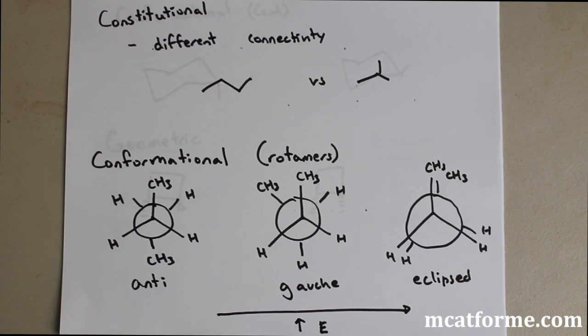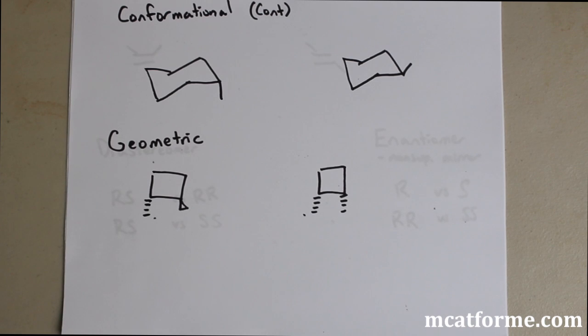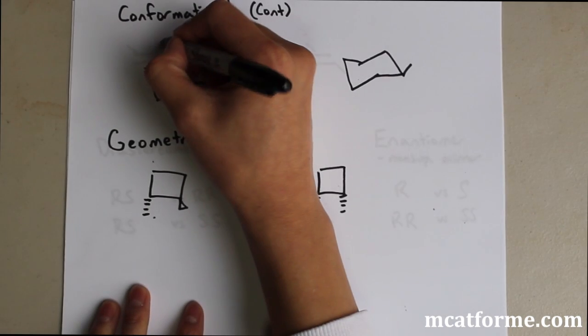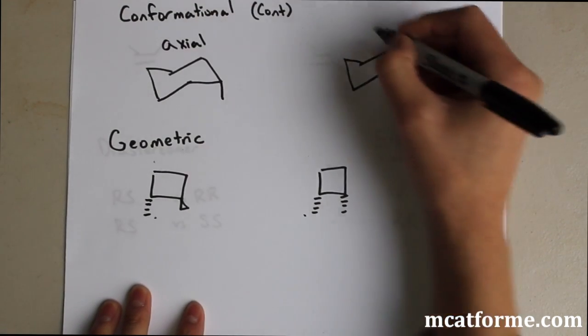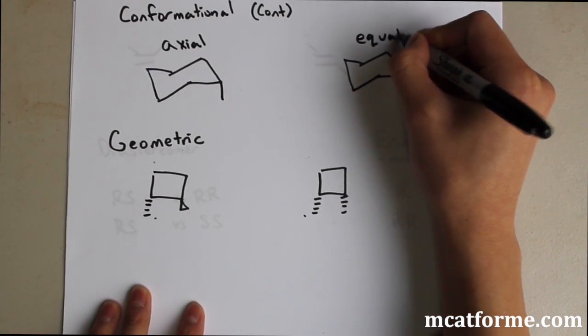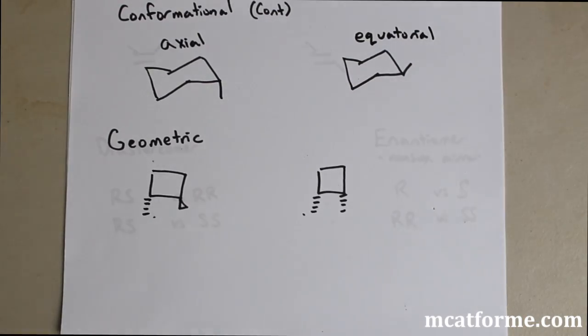So this is one type of conformational isomers, anti-gauche versus eclipse. Another type of conformational isomers is going to be this axial versus equatorial. So remember, when we draw these cyclohexane molecules, we have it in these bolt configurations and they can be either pointing down or pointing up and they're going to be axial or equatorial. And so this one I have drawn on the left is going to be axial. This one's going to be equatorial. So axial is always going to be pointing vertically up and down, and then equatorial is going to be at the angle.